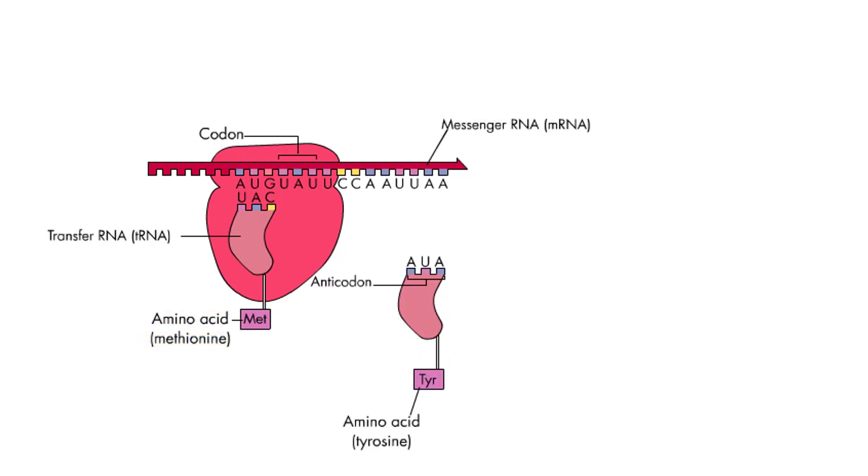Elongation begins when a second tRNA, which in this case brings the amino acid tyrosine, floats to the translation machinery. Note that the tRNA's anticodon is complementary to the second codon on the mRNA.